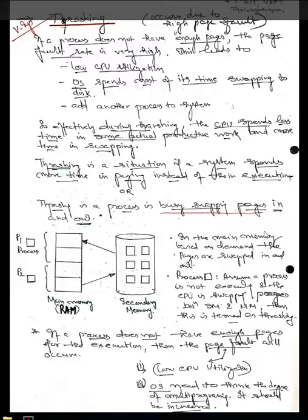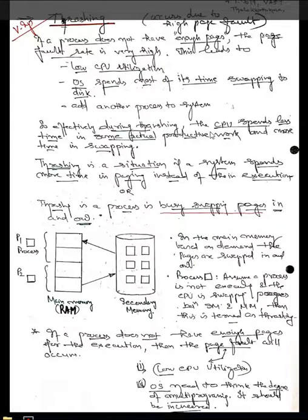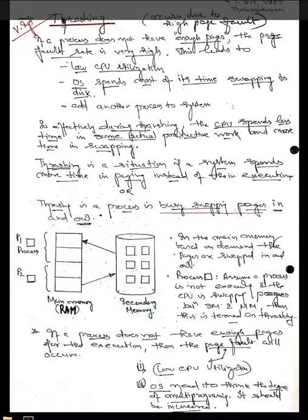Welcome to the knowledge series on Thrashing. Thrashing occurs whenever there are high page faults. Page faults occur when the operating system does a page transfer from secondary memory to primary memory but the page is not able to be traced, so the CPU keeps on searching for the page. This is the symptom related to thrashing.